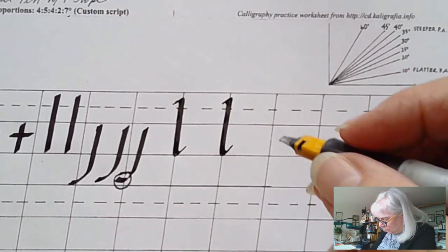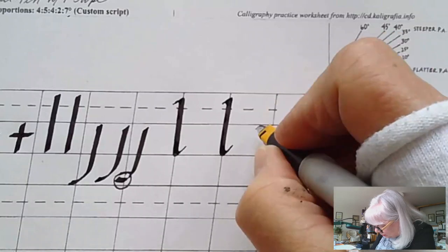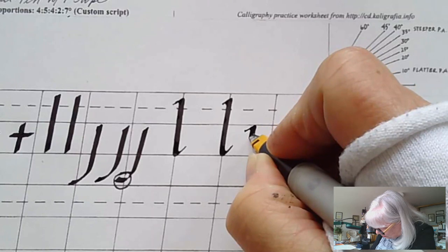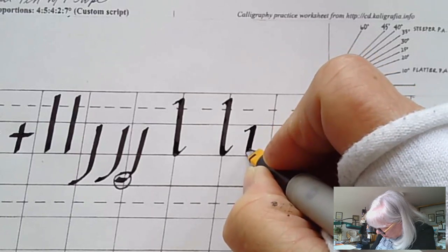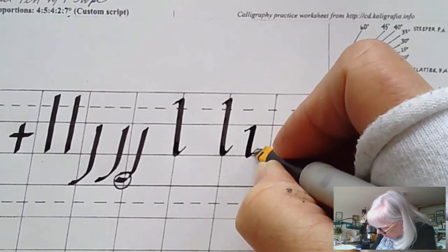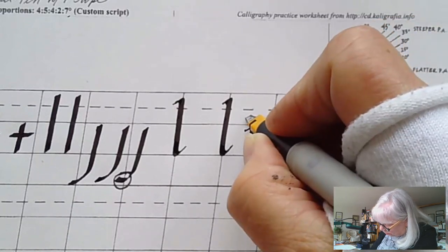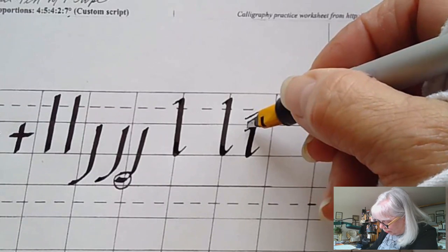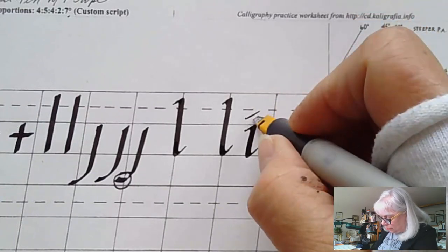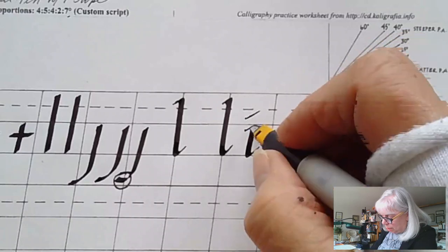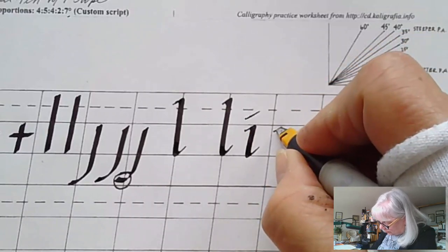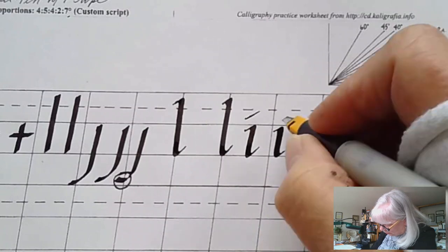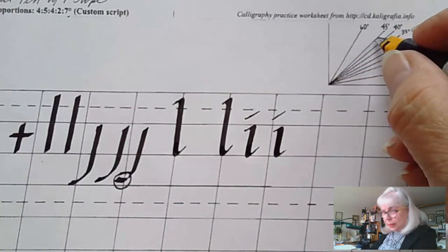The I is below the waistline, pulls down at that slant, exits on a hairline, and go up and put the dot on which is about one pen width, a little more than one pen width away from the top of the I. And remember I'm working at a 45 degree pen angle.